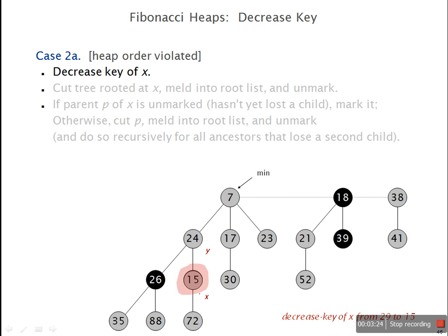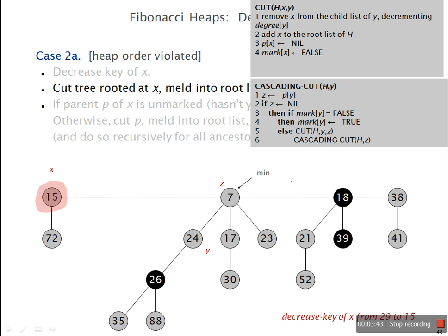If we want to decrease the same node X to 15, then 15 is less than 24, which violates the min-heap property. So we need to apply the cut. The cut procedure removes X from the child list and adds it to the root list of H.